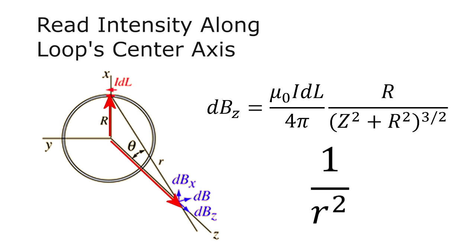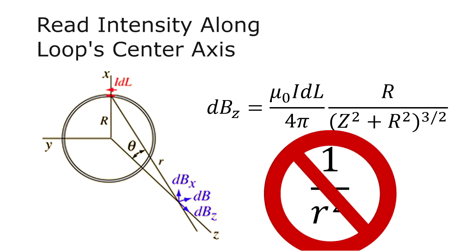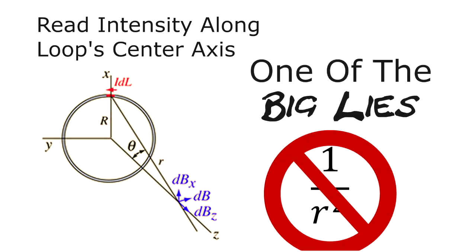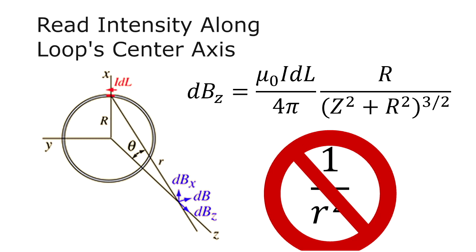Notice this is not a 1 over r squared drop-off. This is one of the big lies in the PEMF community. So-called experts use a 1 over r squared relation to justify needing a high-intensity PEMF device. They're actually using the wrong equation altogether.